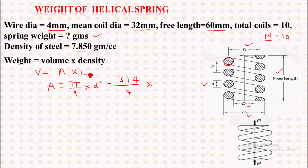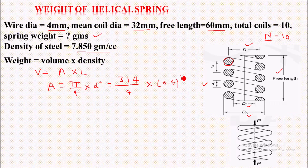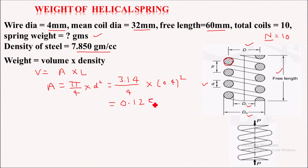Here the density is given in centimeters, so we will take the wire diameter in centimeters. So 4 mm will become 0.4 cm. On solving this, we will get the cross-sectional area which will be 0.1256 centimeter squared.